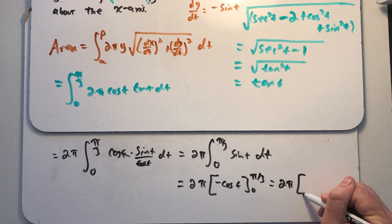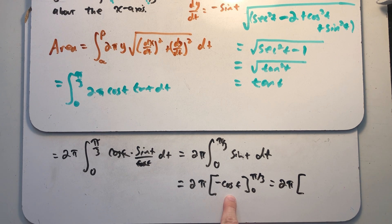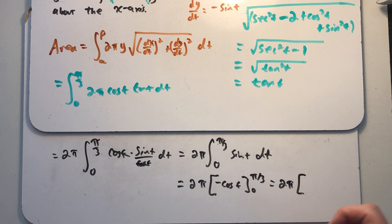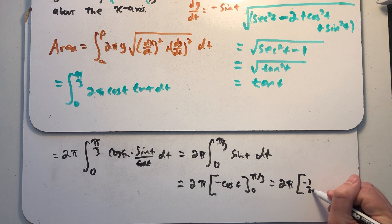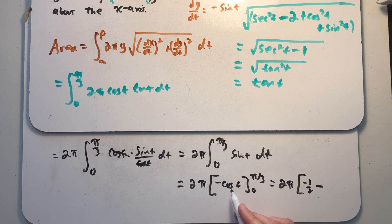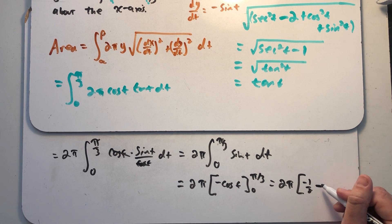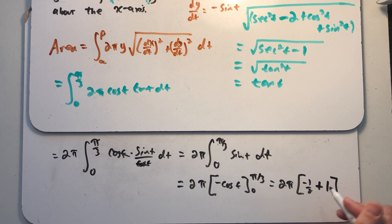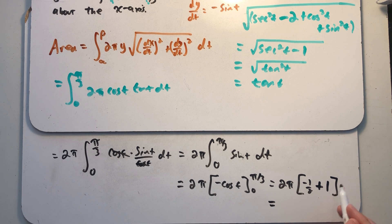So I have two pi times, and I plug in a pi over three where cosine is equal to one half, so it's a minus one half minus. Plug in a zero where cosine is equal to one minus a minus one. Well, that's a half times two pi in the answer. The area of the surface is just pi.